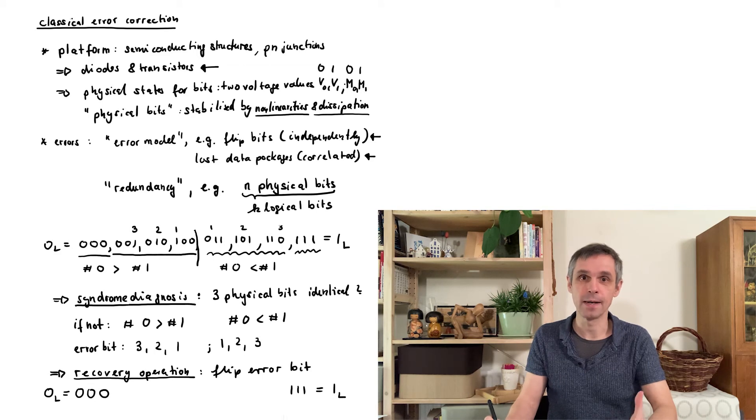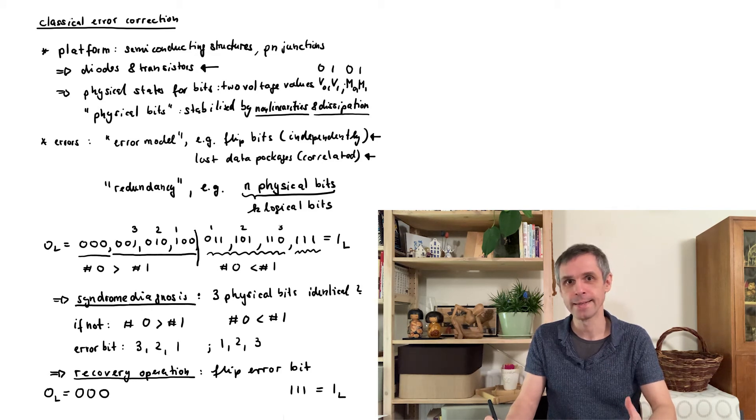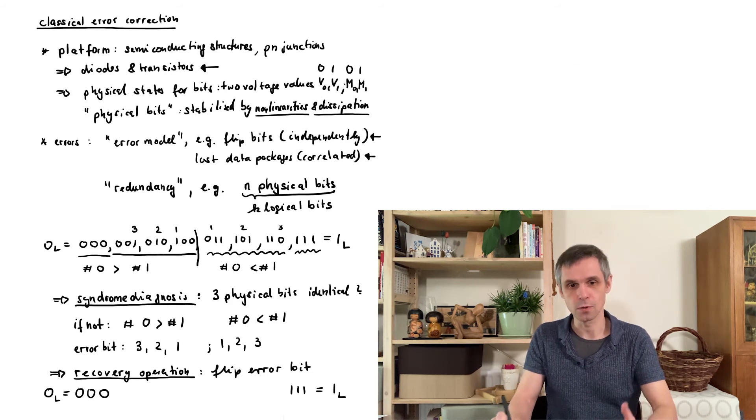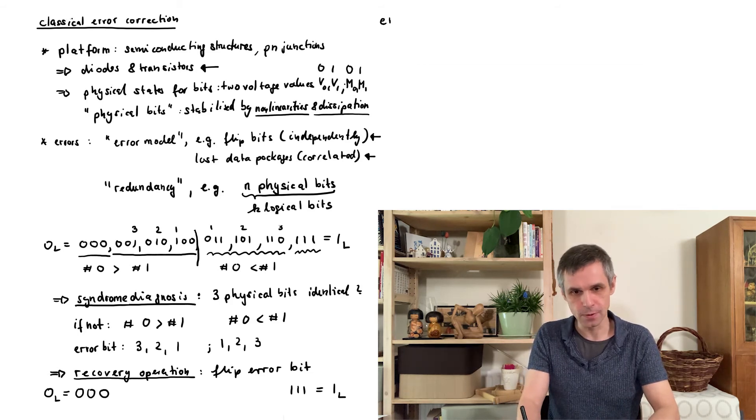Where we then have encoded one logical bit in three physical bits. And the key question is then, how many times do we need to carry out these additional operations, because we also want to carry out our normal computations and these are certainly interfering. And this is again part of our error model. For instance we could have a certain rate with which these errors occur for the physical bits, so a certain error rate p.